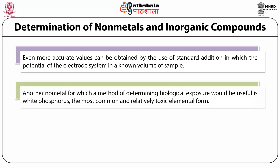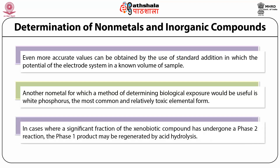Another non-metal for which a method of determining biological exposure would be useful is white phosphorus. Volatile organic compounds that are not metabolized may be readily eliminated with expired air from the lungs. In cases where a significant fraction of the xenobiotic compounds has undergone a phase 2 reaction, the phase 1 product may be regenerated by acid hydrolysis.